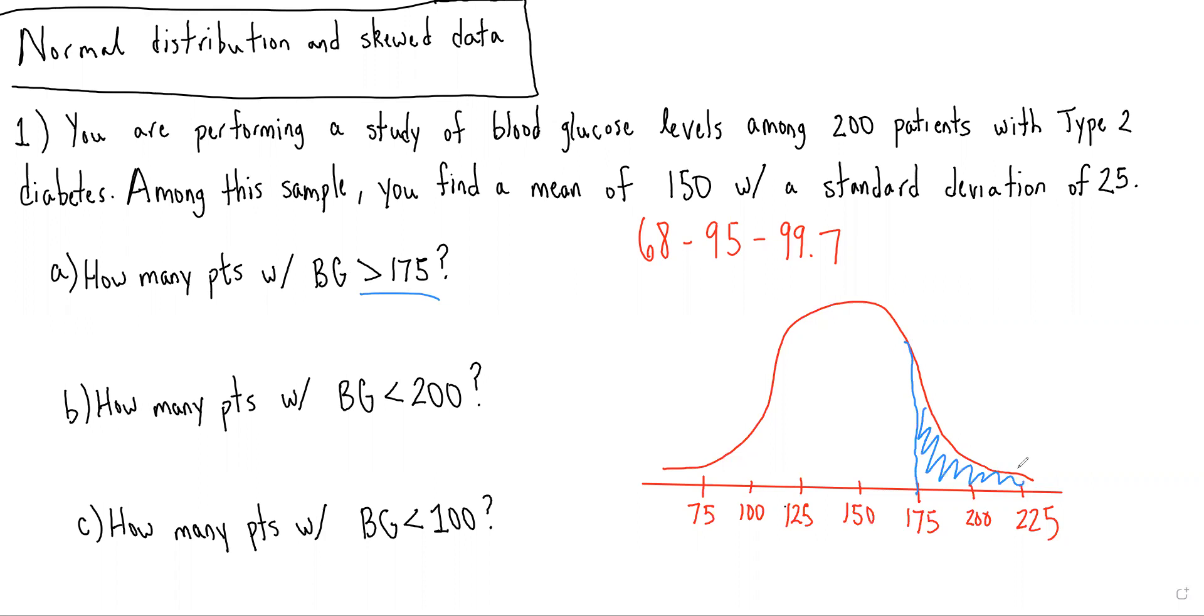And we remember 68% of our data should fall within one standard deviation of the mean. So we know that 50% of the data is here. And then we know because 68% is within one standard deviation, and we're one standard deviation to the right, that this must contain 34% of our data.